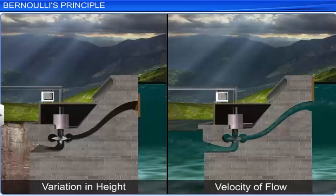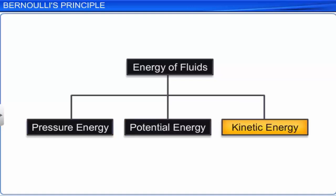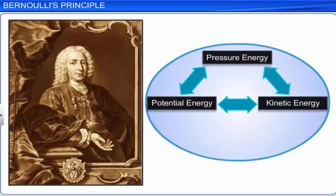All fluids possess energy due to variation in height from a reference level and velocity of flow. There are three types of energy associated with an element of fluid in motion: pressure energy, potential energy, and kinetic energy. According to the law of conservation of energy, these three forms are interconvertible. Bernoulli's equation, developed by Swiss physicist Daniel Bernoulli, relates all three energies. Bernoulli's principle states that for a streamlined flow of an ideal liquid, the total energy per unit mass remains constant at every cross-section throughout the flow.